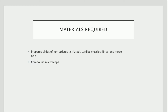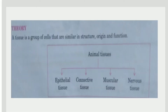A tissue is a group of cells that are similar in structure, origin, and functions. There are various types of animal tissues: they may be epithelial tissue, connective tissue, muscular tissue, and nervous tissue.